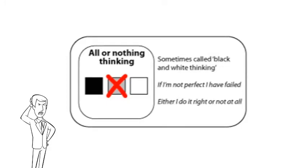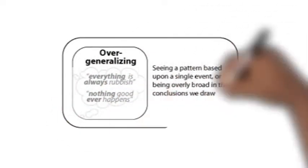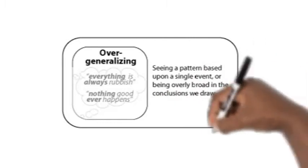With overgeneralizing, Adam uses extreme language like never, always, everything, and nothing to find a demotivating pattern where one may not exist. To Adam, these unrealistic patterns become the rule and he feels defeated before he even meets his interviewer.